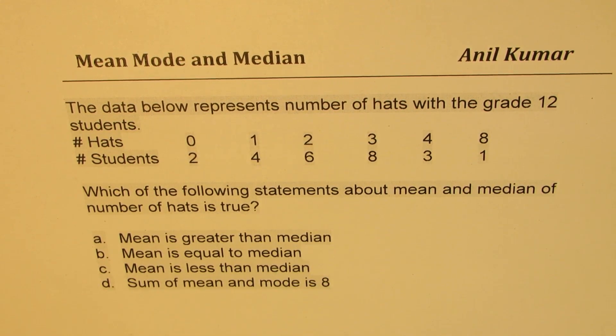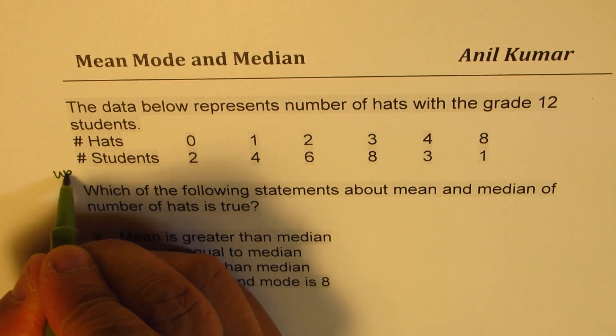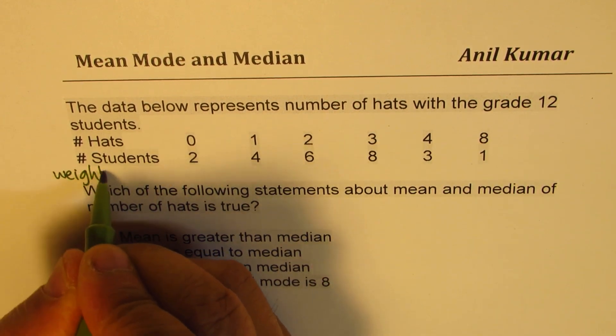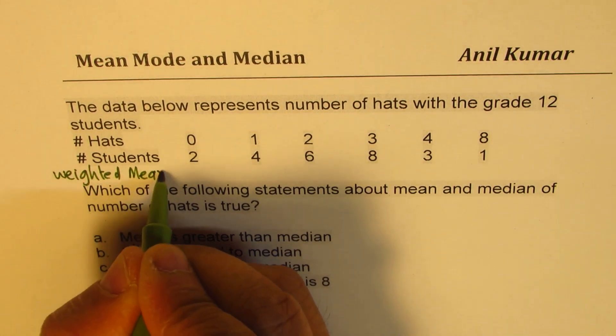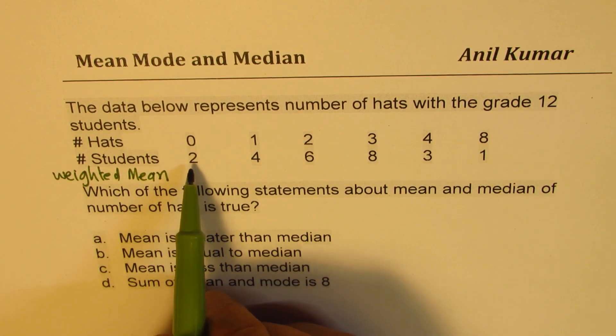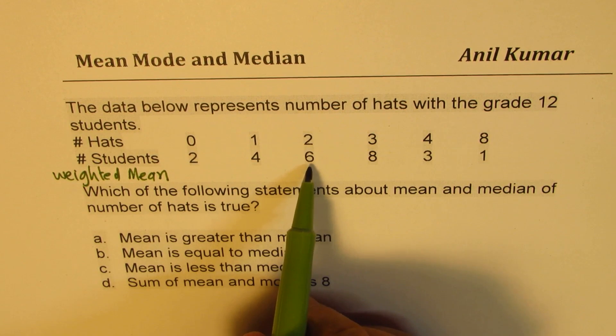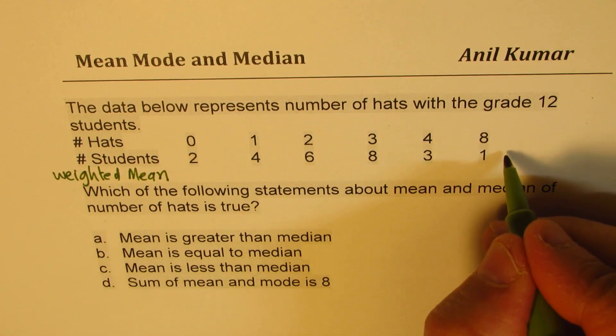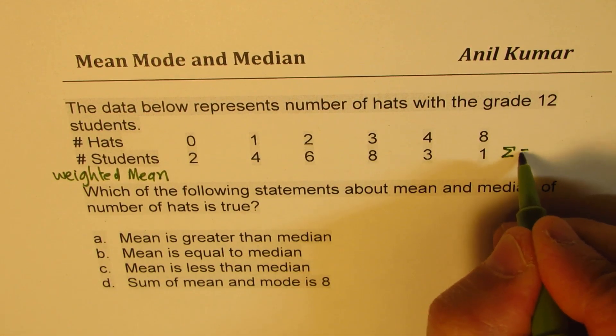When you go through the choices, you know the last one is not correct. You need to compare mean and median basically. That is what the question is. Now, it is important to understand that we are talking about weighted mean here. That is very important. Second thing, median is the center point. So, let's count the number of students. The number of students will be 2 plus 4, 6, and 6, 12, 20, 24. So, we get sum of students as equal to 24.